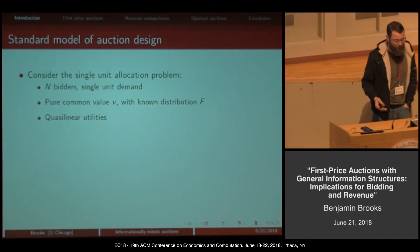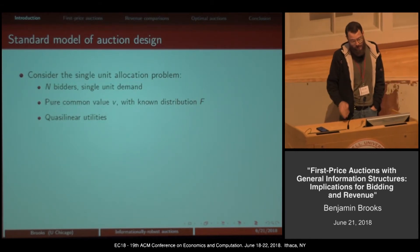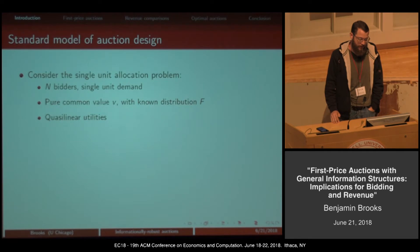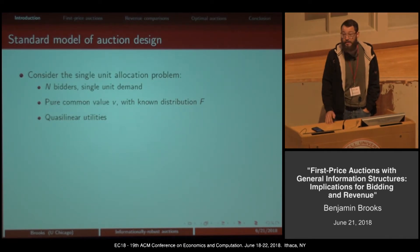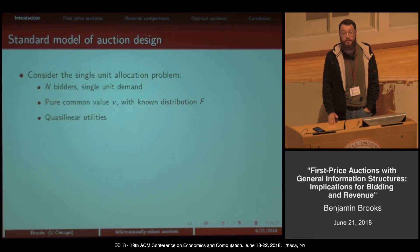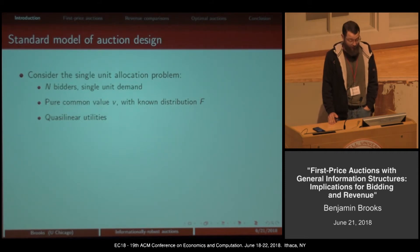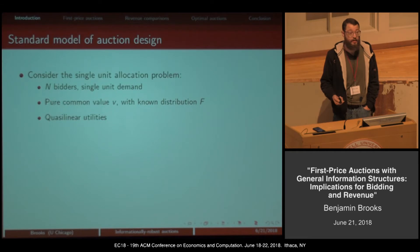The papers I'm going to talk about are a little bit more general, but to fix ideas for this talk, let's think about the canonical single-unit allocation problem, where there's a fixed set of bidders who demand a single unit of a good, and there's a seller who has a single unit for sale.